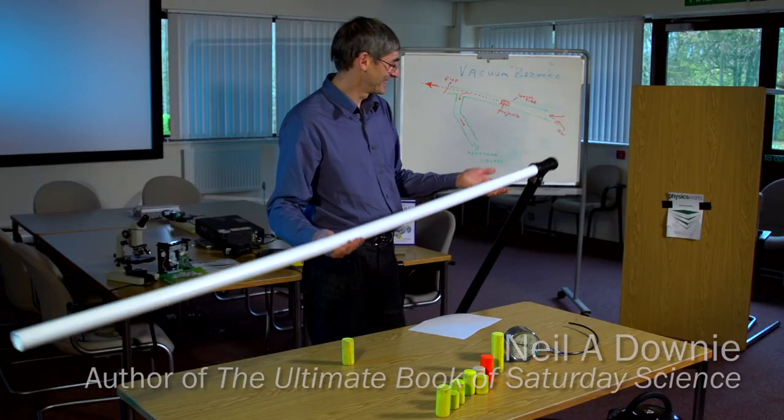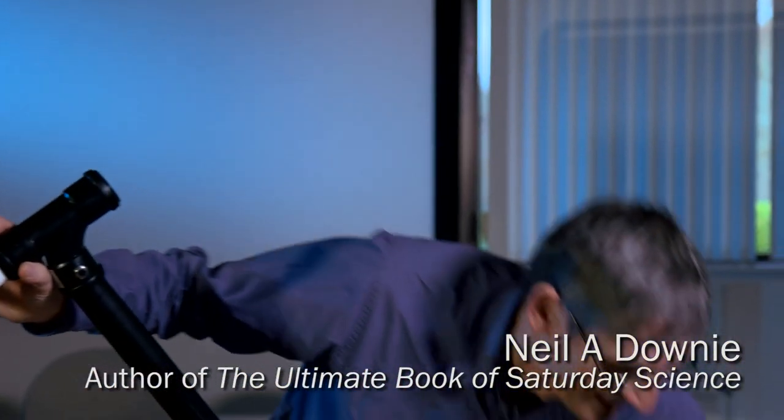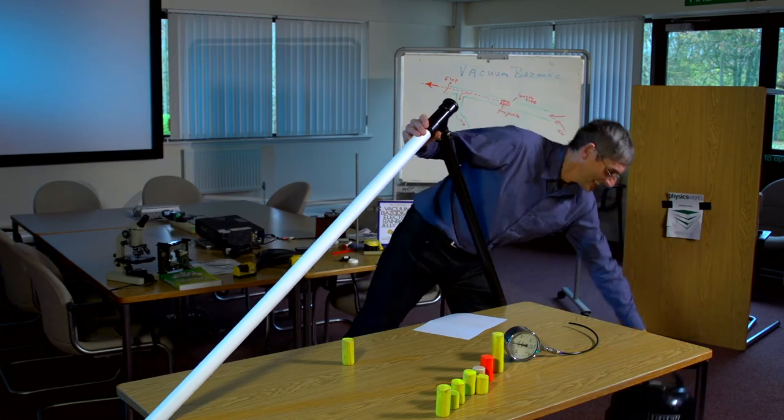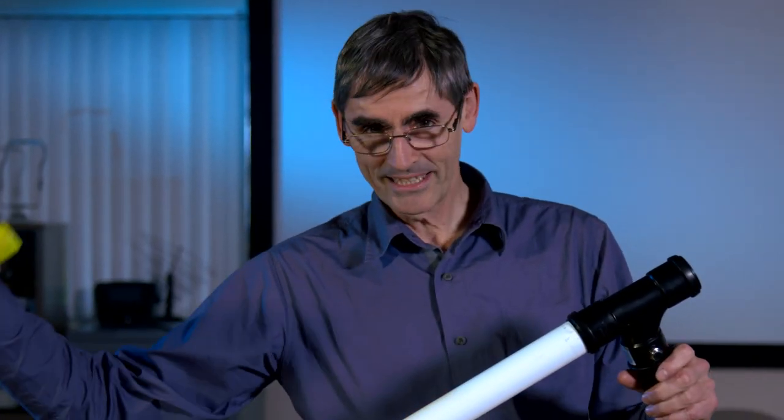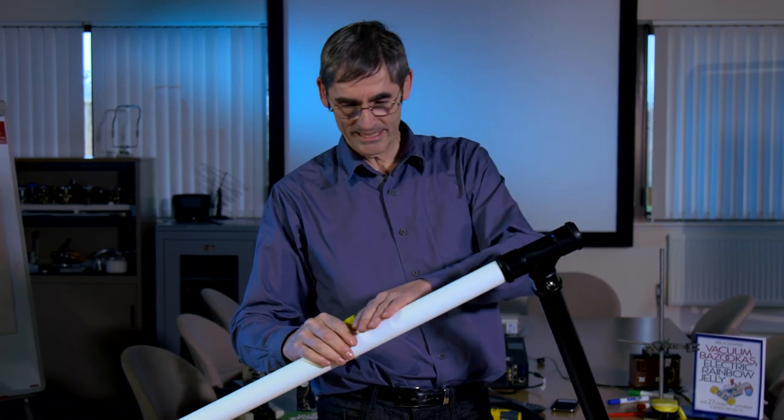This is a vacuum bazooka. The idea is that we take low pressure produced by a vacuum cleaner and have low pressure on one side of a projectile and high pressure, in this case just the atmosphere, on the other. That's why we call it the vacuum bazooka. We basically evacuate this tube.